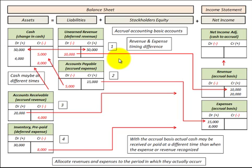I'll go through these four basic accrual accounts. For a better understanding of how they work, I'll compare the timing of cash receipts and payments versus the recognition of revenues and expenses, and I'll show how the accrual basis is calculated for each of these accounts.